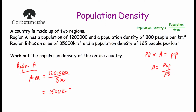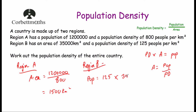For Region B: it has an area of 35,000 kilometres squared and a population density of 125 people per kilometre squared. Using the formula population equals population density multiplied by area, we multiply 125 by 35,000. There are 35,000 squares with 125 people in each, so the population of Region B is 4,375,000.